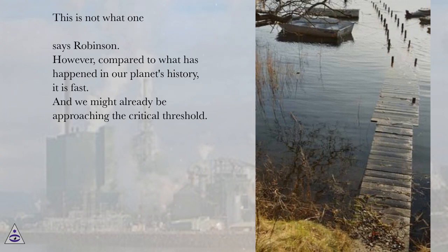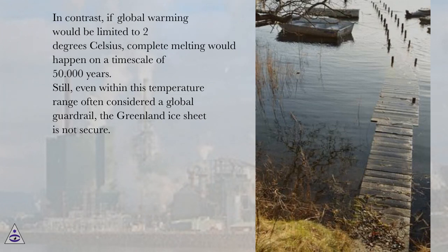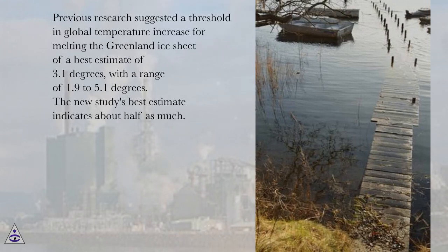However, compared to what has happened in our planet's history, it is fast. And we might already be approaching the critical threshold. In contrast, if global warming would be limited to 2 degrees Celsius, complete melting would happen on a timescale of 50,000 years. Still, even within this temperature range often considered a global guardrail, the Greenland ice sheet is not secure. Previous research suggested a threshold in global temperature increase for melting the Greenland ice sheet of a best estimate of 3.1 degrees, with a range of 1.9 to 5.1 degrees. The new study's best estimate indicates about half as much.